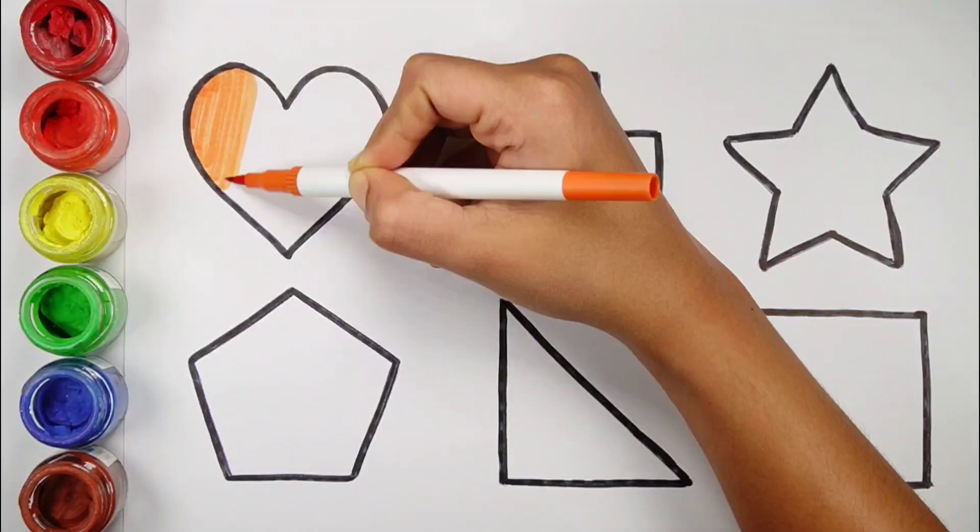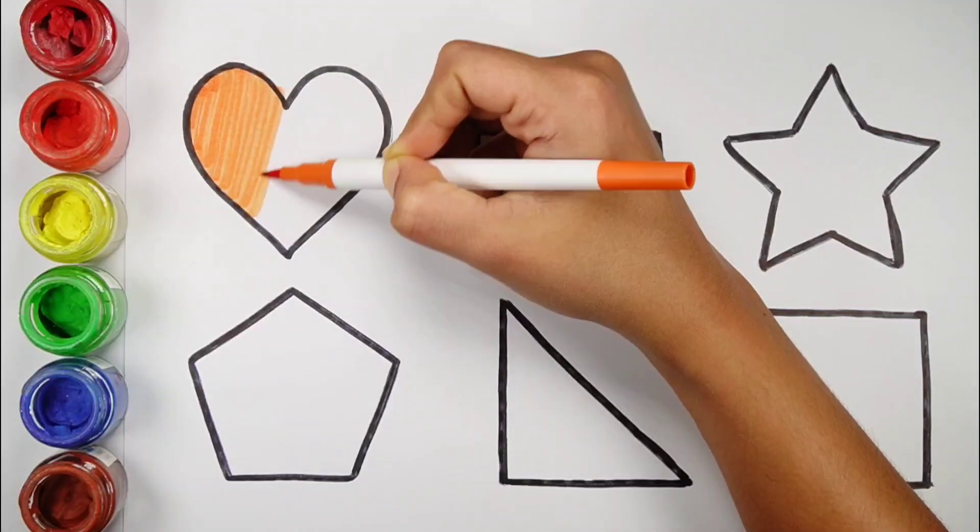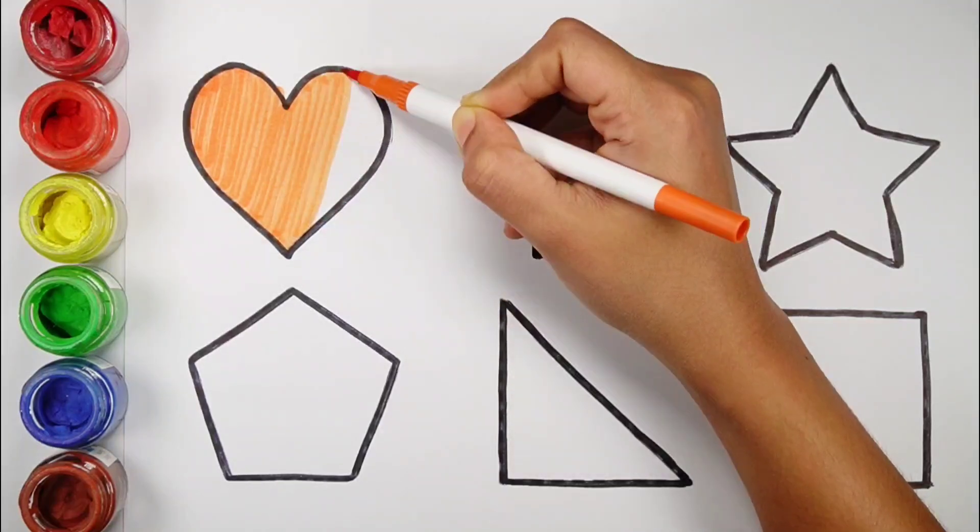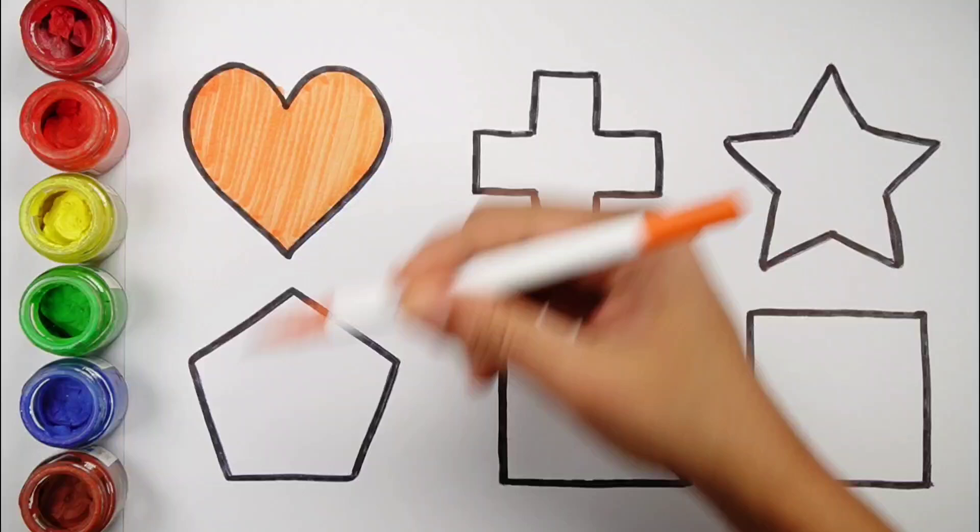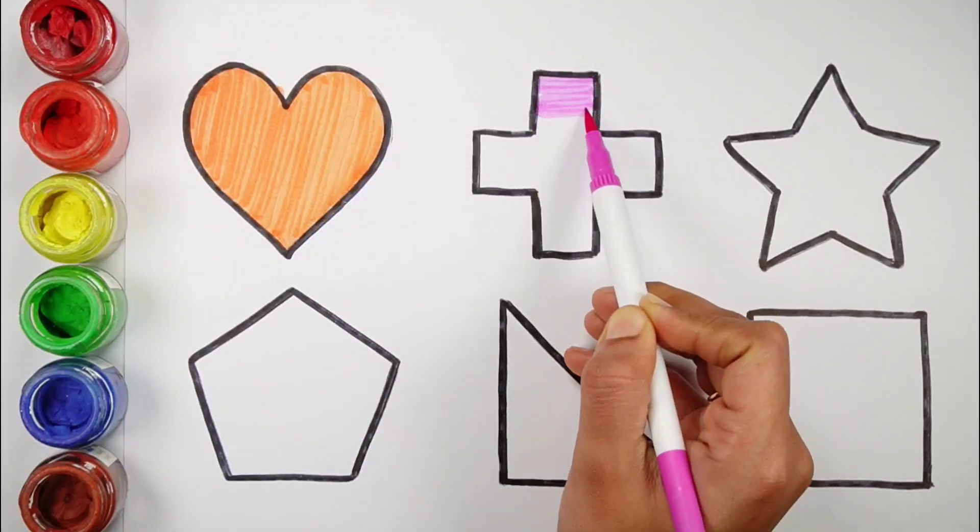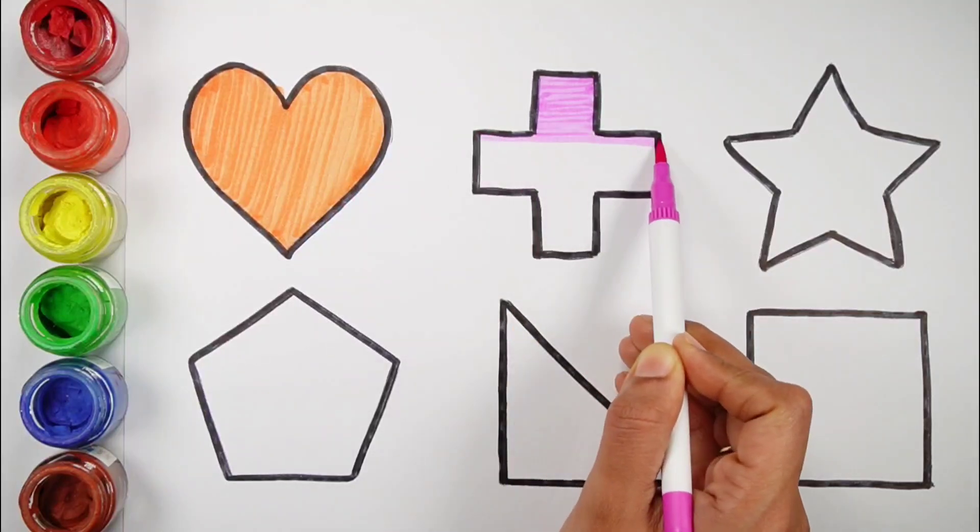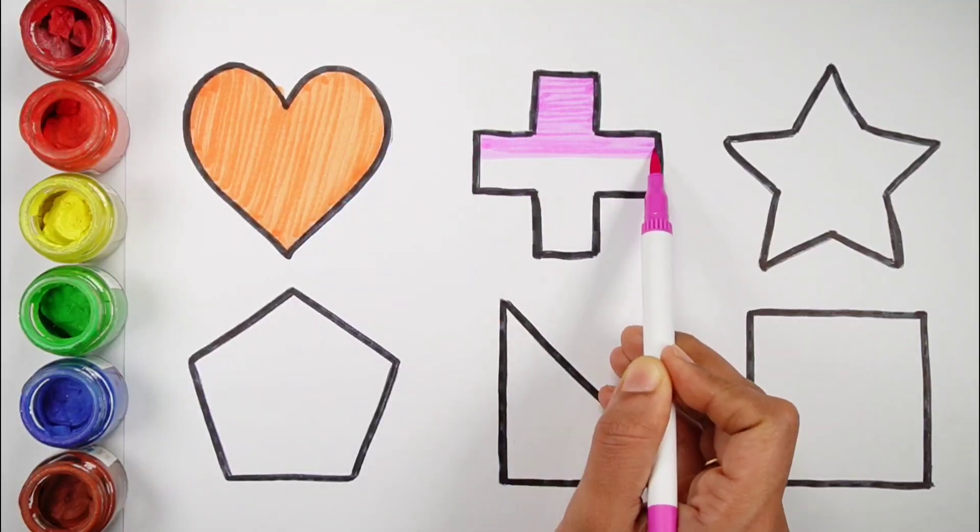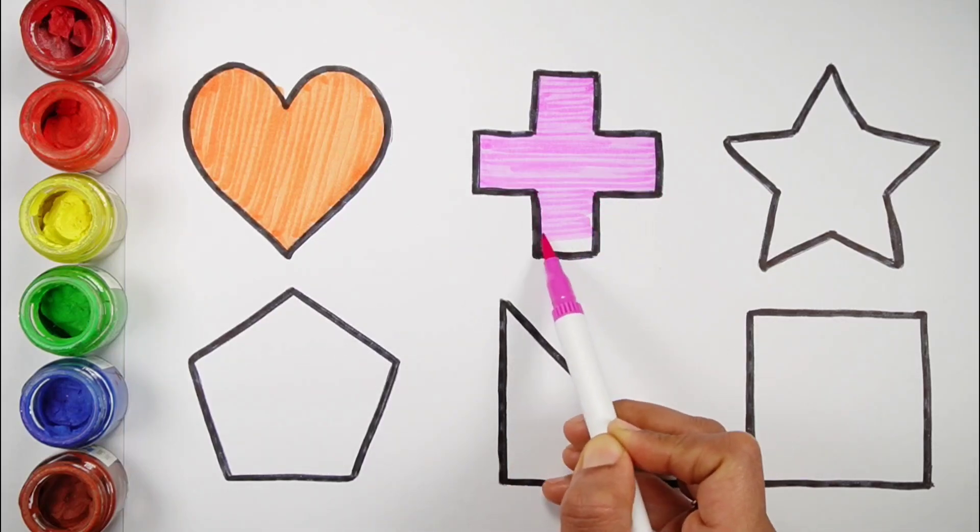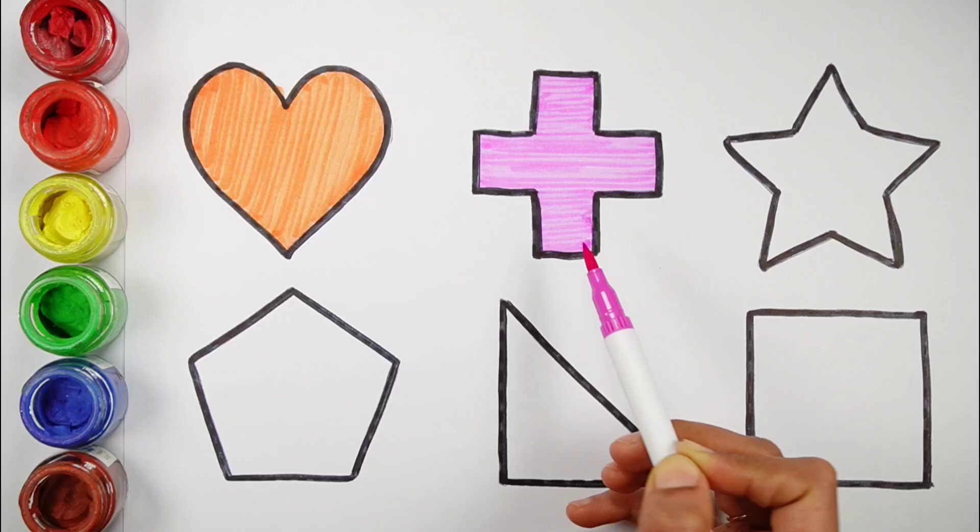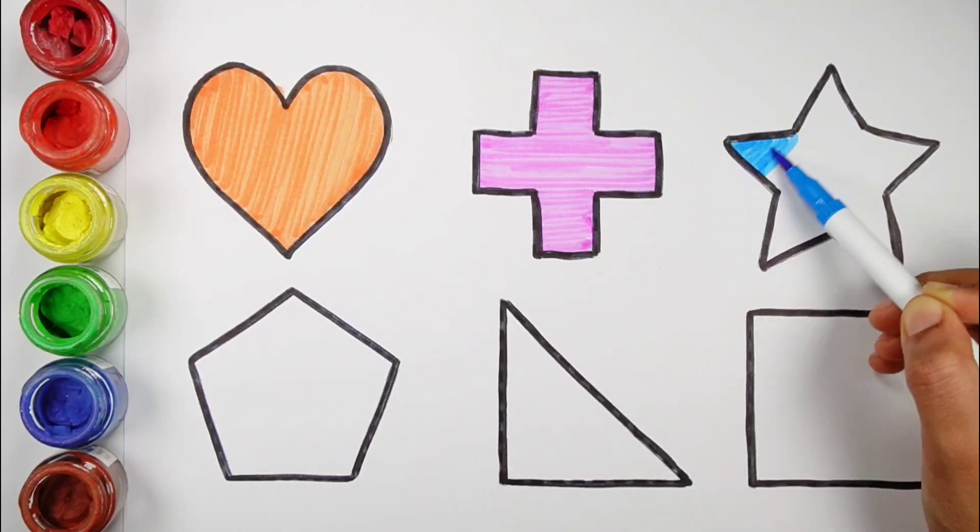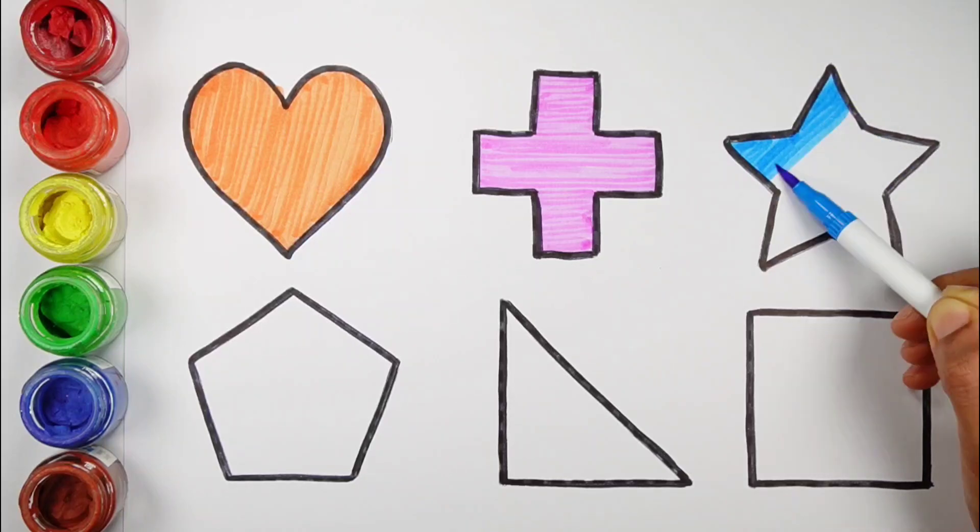Square, orange color. Heart. Pale purple color. Cross. Blue color.